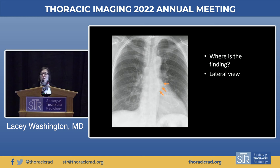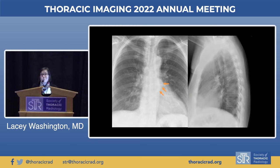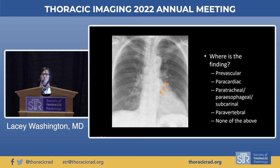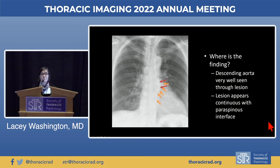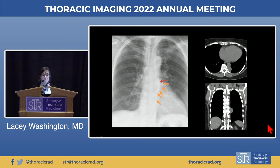On all the other cases the lateral view has been really helpful, but when lesions are small, the lateral is not necessarily helpful at all. To localize this finding: the descending thoracic aorta is well seen right through the lesion, but the lesion appears continuous with the left paraspinous interface, suggesting a paravertebral lesion. On CT — both axial and coronal images — you can see this paravertebral lesion is a nerve sheath tumor, the most common paravertebral mass, much more common than extramedullary hematopoiesis.